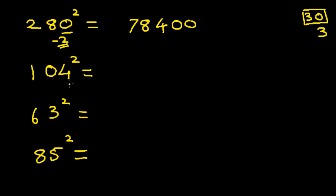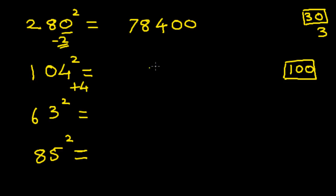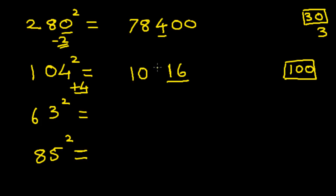Next we find the square of 104. We take the base 100. The first step: subtract the number from the base — 104 minus 100 is plus 4. To find the first two digits, we square this number and get 16. Remember, since the base is 100, the square of this number gives you the first two digits, whereas when the base was 10 it only gave one place. Now add 104 plus 4 — you get 108. The answer is 10816.